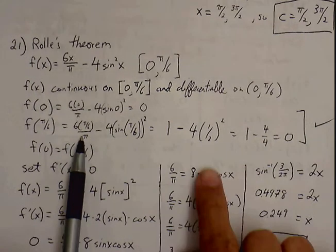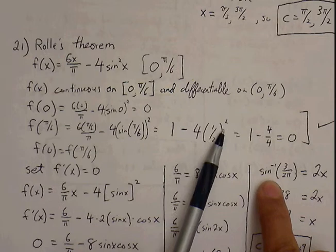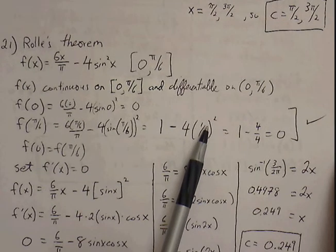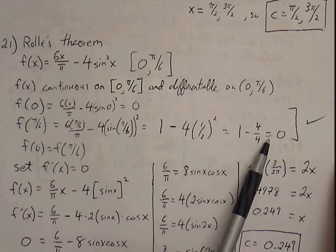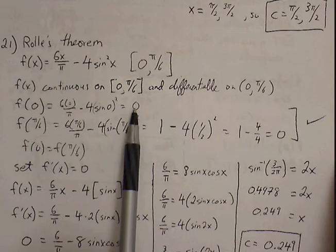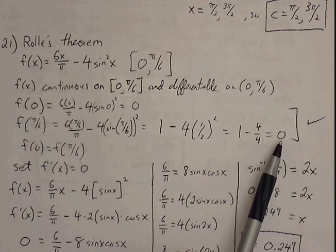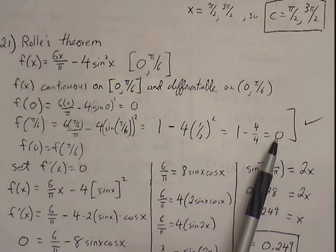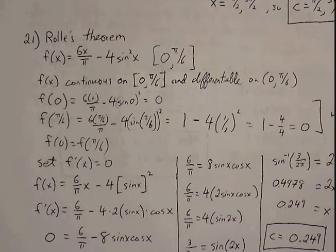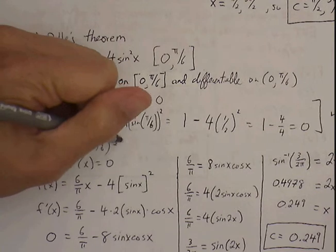Sine of pi over 6 is simply 1/2. So 4 minus (1/2) squared — 1/2 squared is 1/4, so 4 times 1/4 is 1. Then 1 minus 1 is 0. So we have our y values being 0 and 0 — these meet our third condition. Endpoints give us the same y value, so f of 0 equals f of pi over 6, which equals 0.